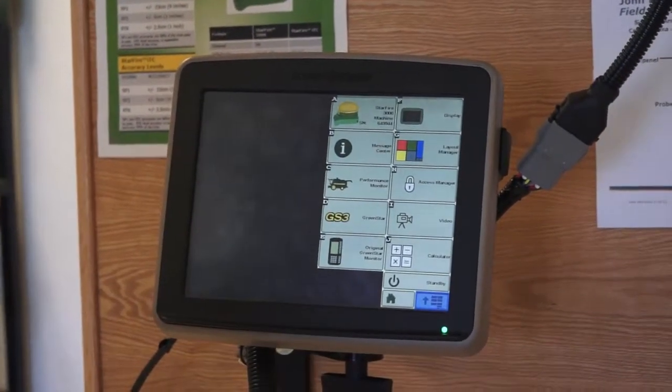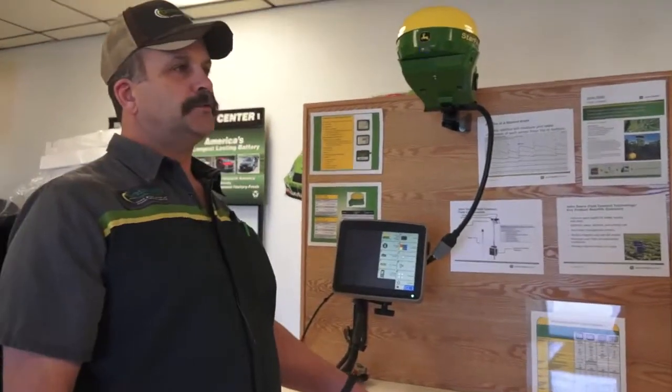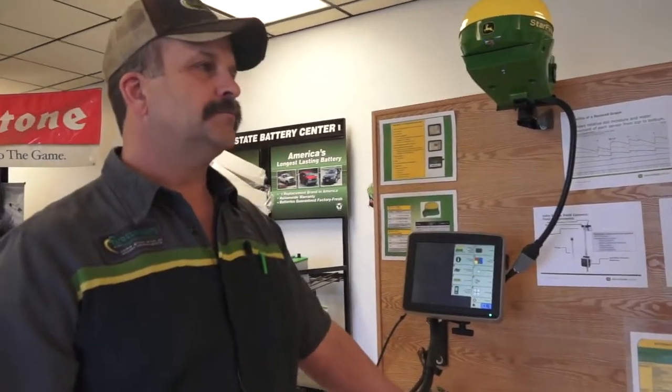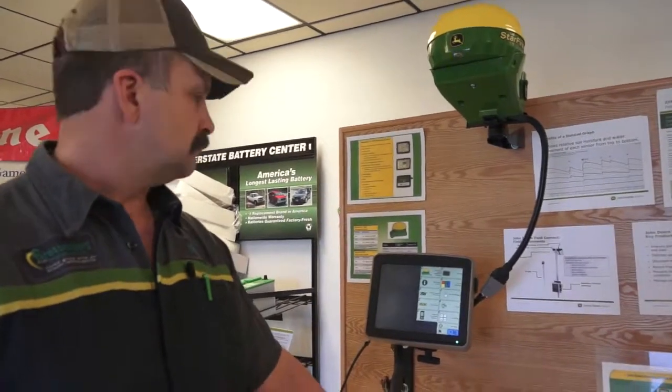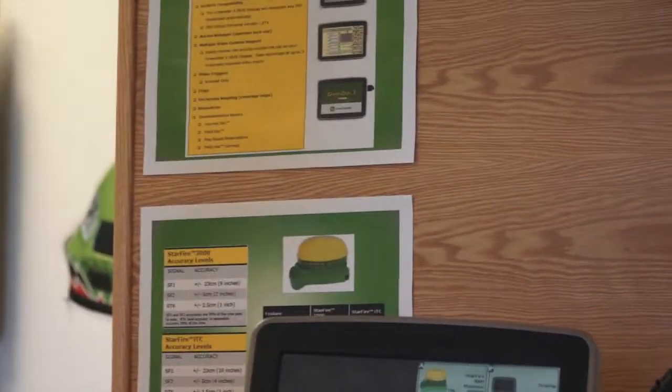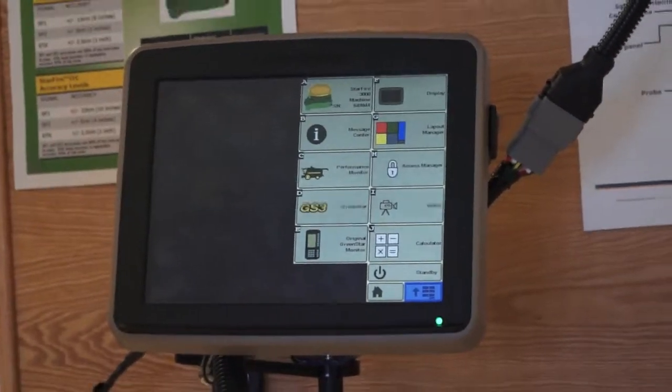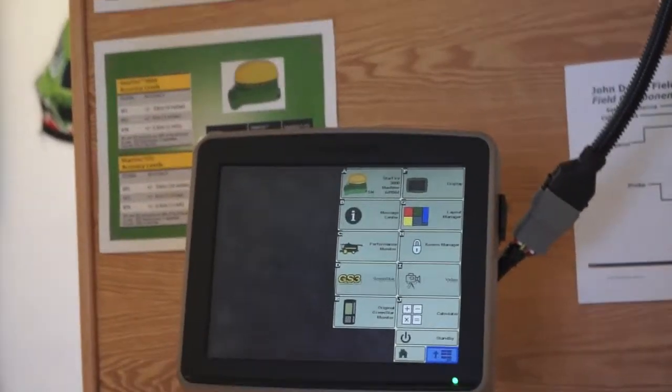How long are the licenses good for? You can purchase your license for as little as three months or up to three years. Three years is $2,500 or three months is $650. That's just the correction signal for SF2 that gives you sub 2-inch accuracy. 2 inches or less on a 3000 receiver. On your older ITC receivers, that will still be 4 inches.